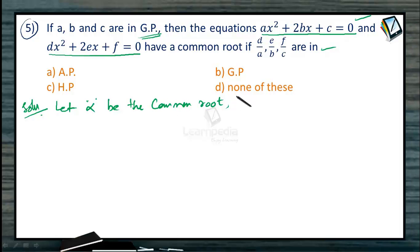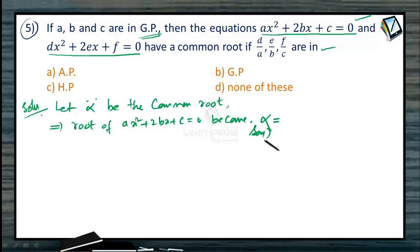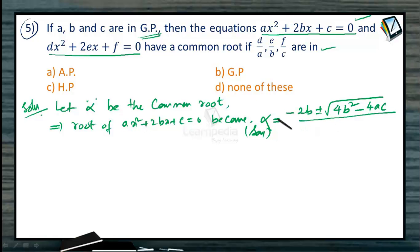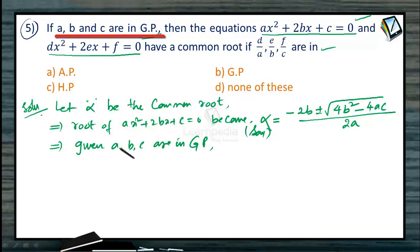Alpha being the root of the first equation AX² + 2BX + C = 0 gives us alpha = (-2B ± √(4B² - 4AC)) / 2A. Now it is given that A, B, C are in geometric progression, so B² = AC.